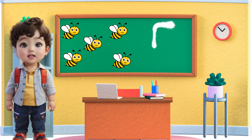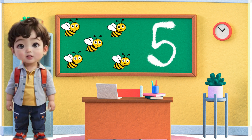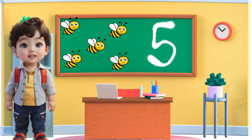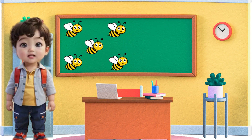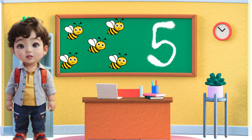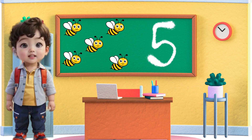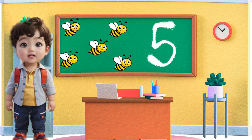Let's look at some examples. How many bees are there in this honeycomb? One, two, three, four, and five. There are five bees.